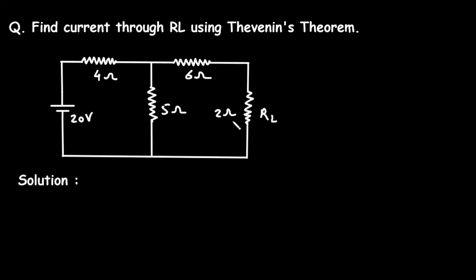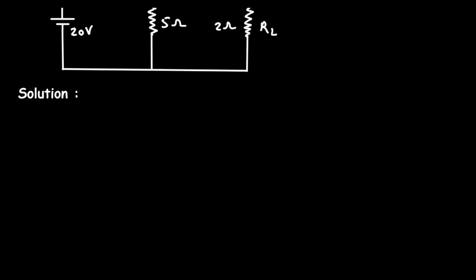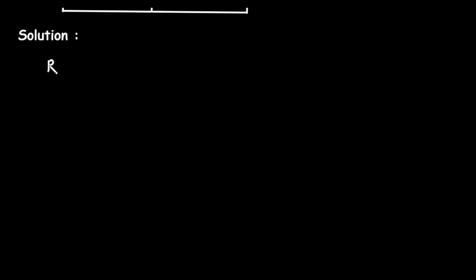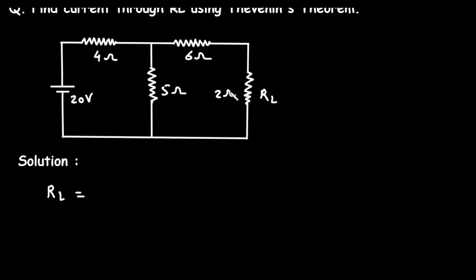Here we have to find the current through this RL, that is the current through this 2 ohm resistor, by using Thevenin's theorem. For Thevenin's theorem, we need RL, that is the load resistor. The value of the load resistor is given — it is 2 ohm. Then we need the value of RTH, which is Thevenin's resistance, and we need the value of VTH, which is Thevenin's voltage.